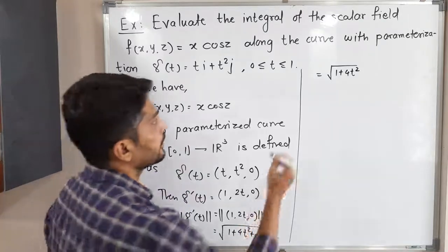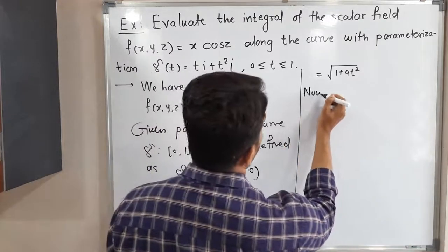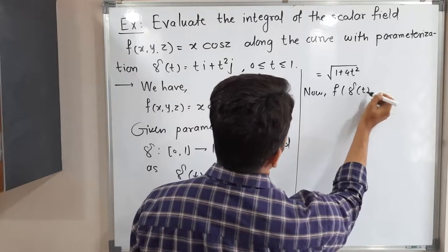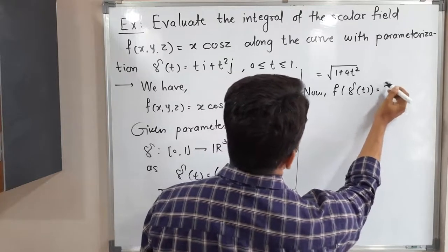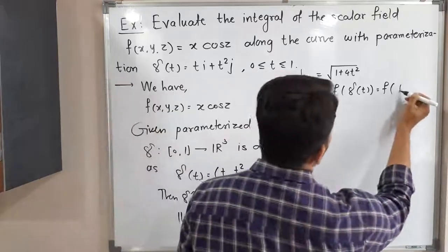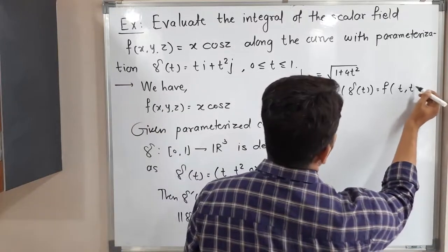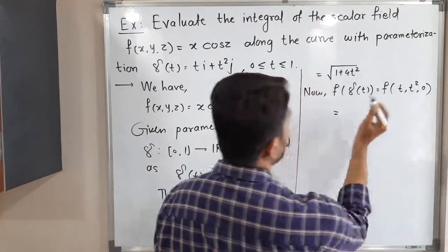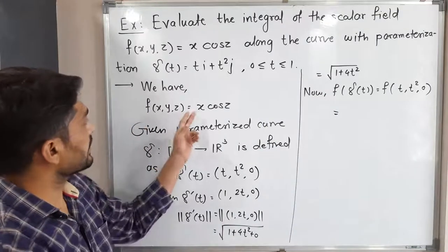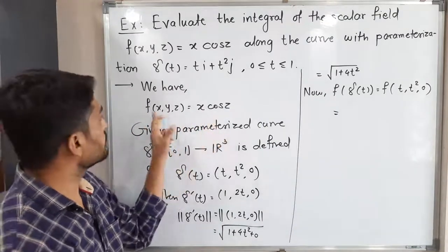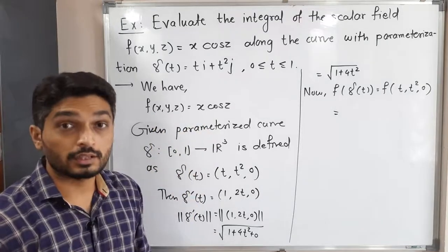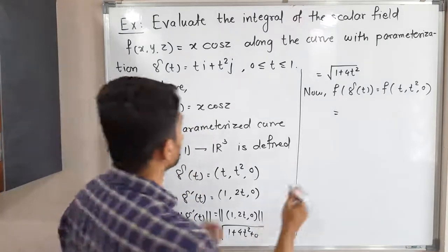Now let us find f(γ(t)). We have γ(t) = (t, t², 0). Following the definition of f, which is x·cos(z), we take the first component for x and the third component for z.